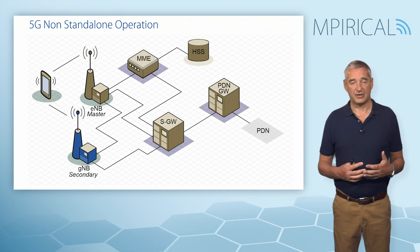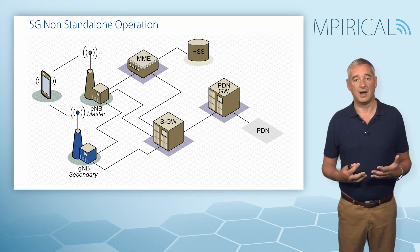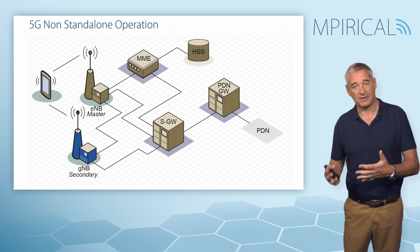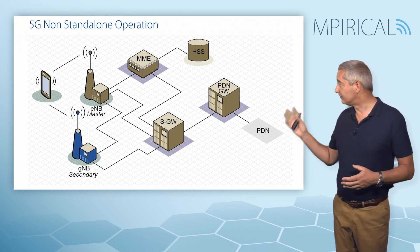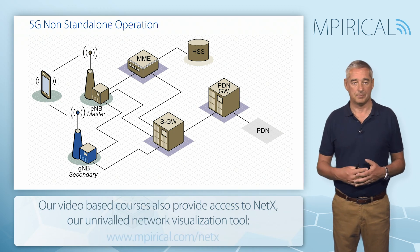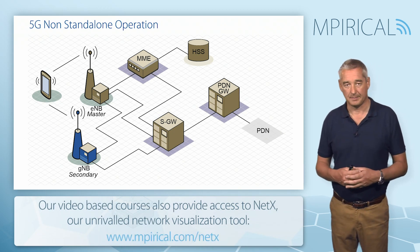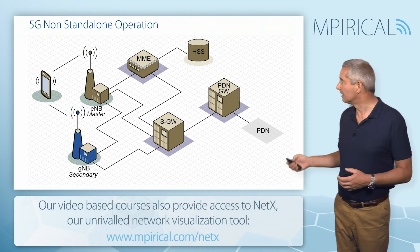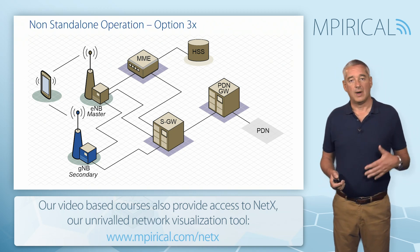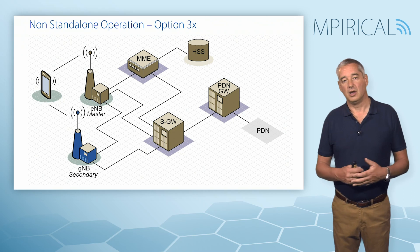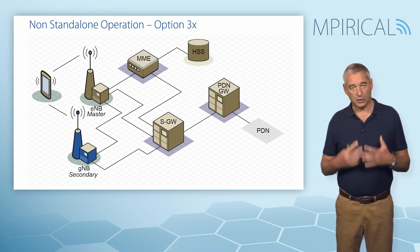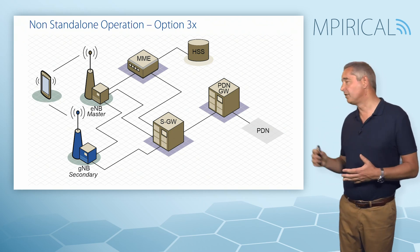The gNodeB will also connect back to the serving gateway, but only for user plane traffic. The key thing to stress here is that the control of this device — which now supports both the 4G and the 5G radio interface — is still held in the 4G core network, the Evolved Packet Core, the MME in particular. There are many different options available for introducing this non-standalone mode of operation, but by far the most common is referred to as option 3x.